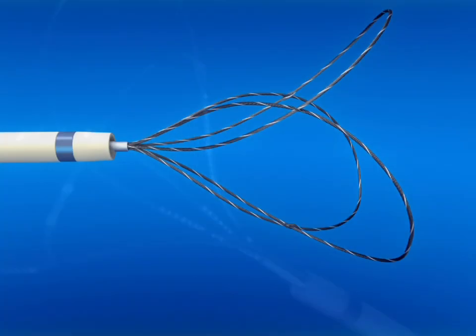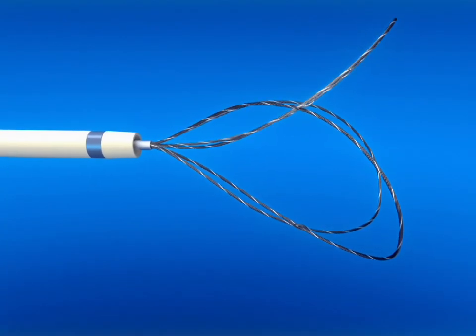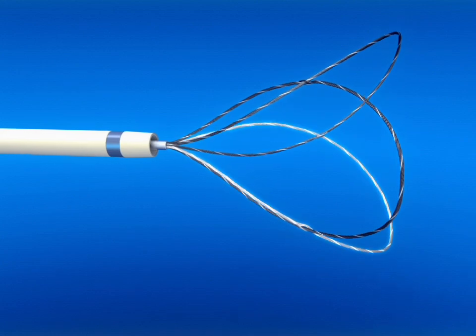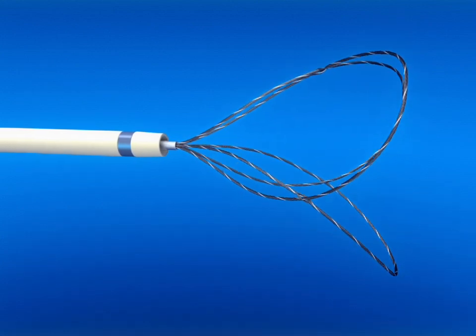The Merritt N-Snare system is uniquely designed with three loops to increase the probability of foreign body capture over single loop designs.